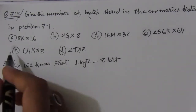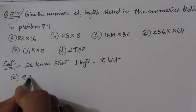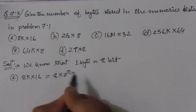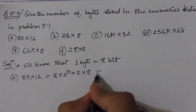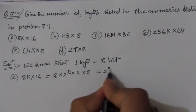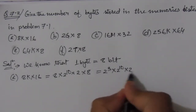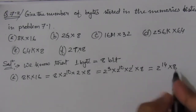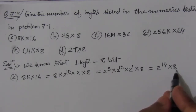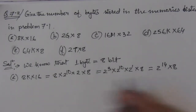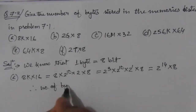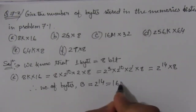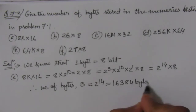In part a, we have 8K × 16. We can write this as 8 × 2^10 × 16, which is 2^3 × 2^10 × 2^1 × 8. This gives us 2^14 × 8 bits. Since 8 bits equals one byte, the number of bytes B = 2^14, which equals 16,384 bytes.